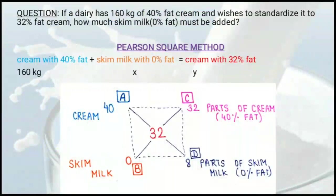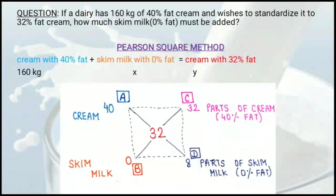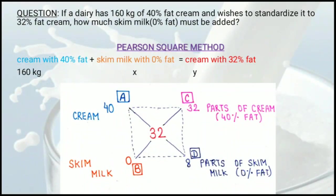Let's take an example to see how these questions are solved. A dairy has 160 kg of 40% fat cream and wishes to standardize it to 32% fat cream. How much skim milk of 0% fat must be added?